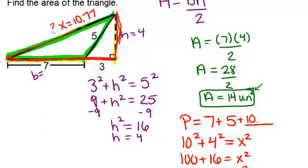So in our perimeter, we can add in 10.77 as our third side, which means that the perimeter is 22.77 units.